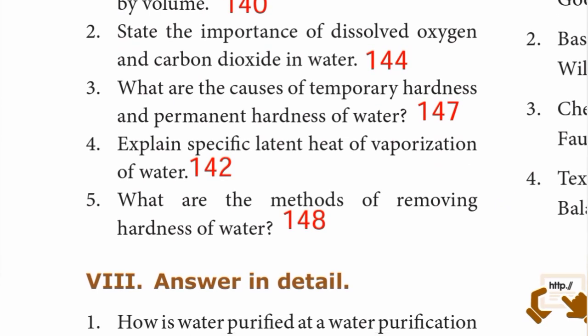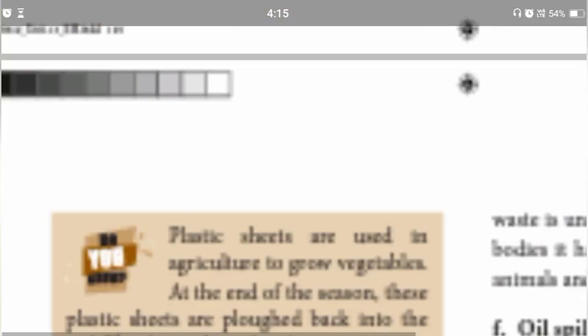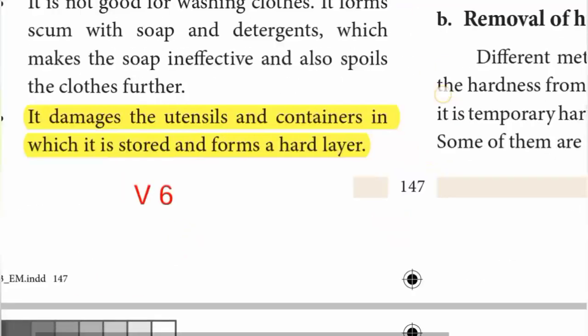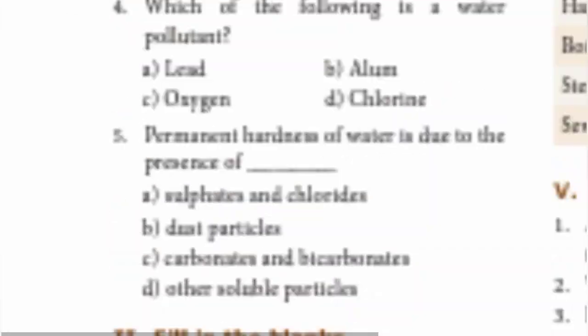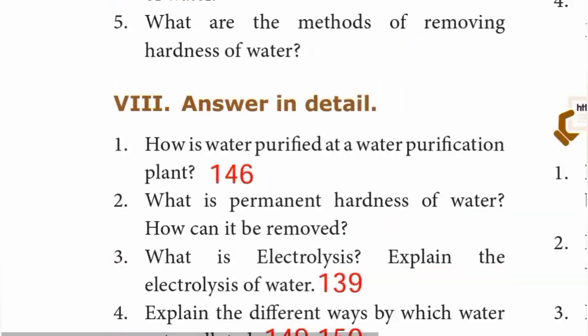Question number 3: What are the causes of temporary hardness and permanent hardness of water? Temporary hardness is due to the presence of carbonate and bicarbonate salts of calcium and magnesium. Permanent hardness results due to the presence of chloride and sulphate salts of calcium and magnesium.